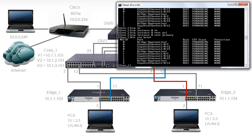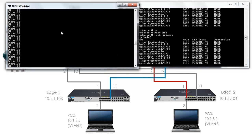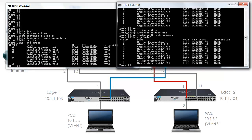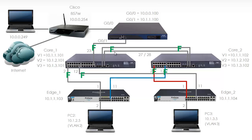The port is now forwarding on Core 1. On Core 2, STP instance 0 root secondary. Display STP brief. Now on both switches all ports are forwarding. You can see the roles are either designated or root. For all instances, all ports are forwarding on both switches. Previously this port was blocking, but now it's forwarding.